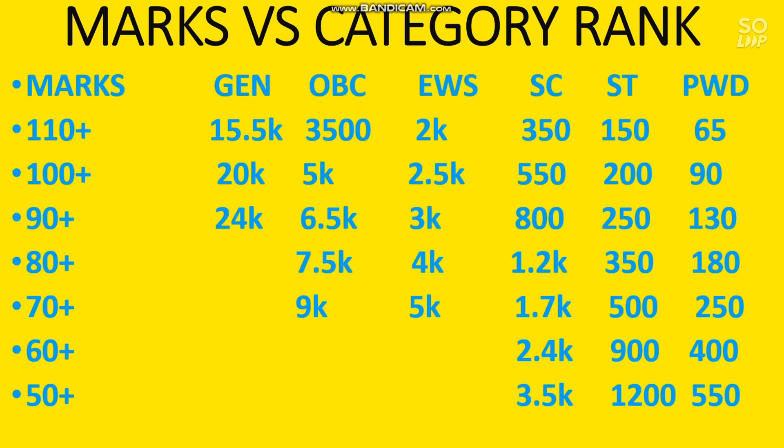This covers all the marks versus category rank data for General, OBC, EWS, SC, ST, and PwD categories. I have also discussed the minimum marks needed subject-wise and overall to clear the cutoff category-wise. Please share this video with your friends as it is very important for setting an aim for JEE Advanced. Many students are now preparing for JEE Advanced after securing enough percentile in JEE Mains. Thanks for watching — don't forget to subscribe and share.